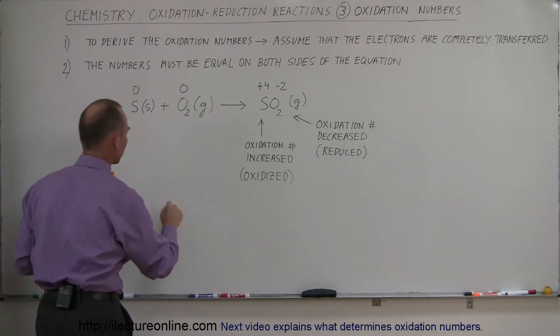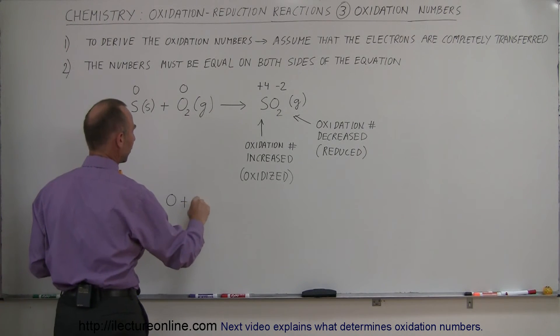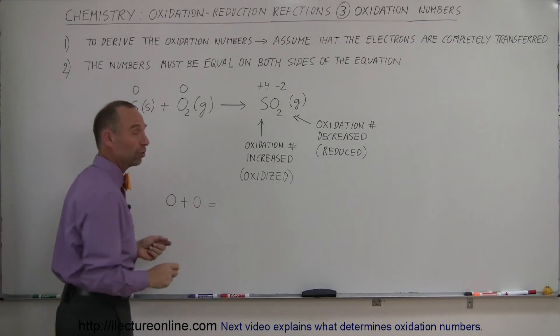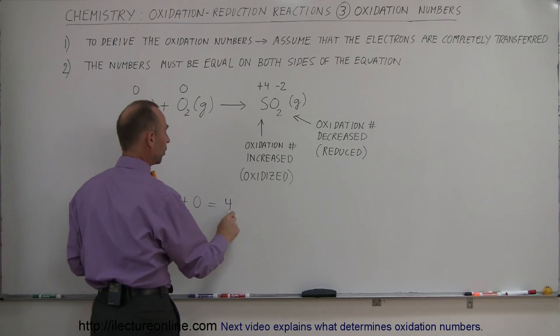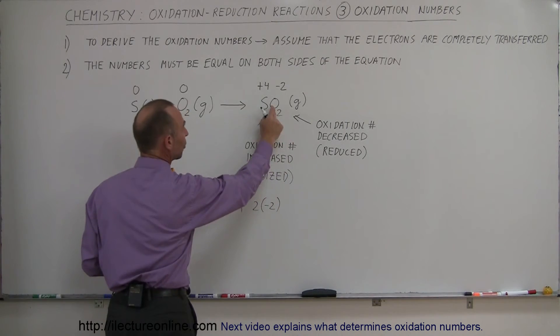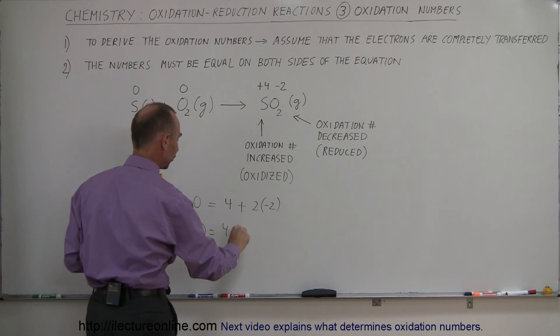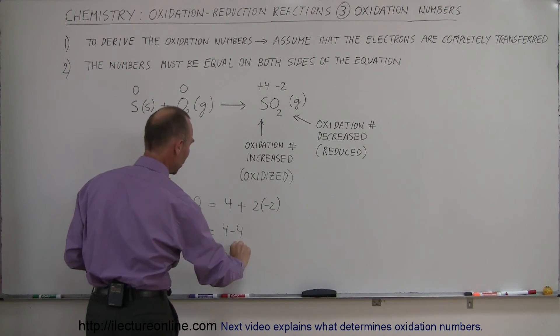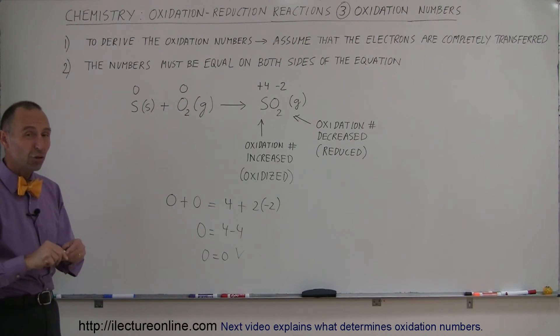When you look at the equation, the oxidation numbers on the left side are zero plus zero, and that should equal the oxidation numbers on the right side, which is one times positive four plus two times negative two (because we have two oxygen atoms). Notice that we have zero equals four minus four, or zero equals zero, which means the oxidation numbers are equal on both sides of the equation, which is usually what we want.